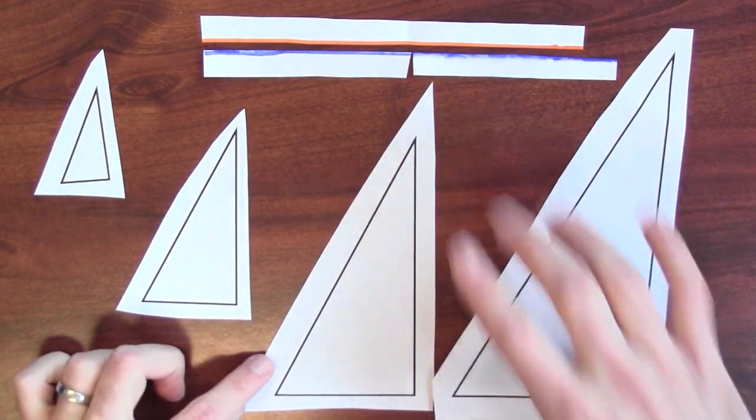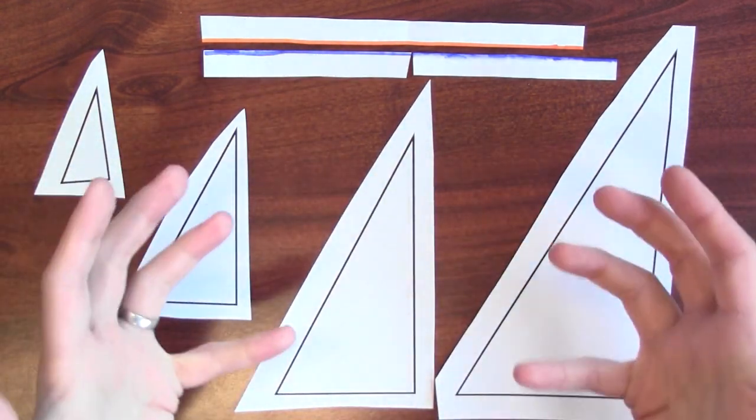The ratio of their heights to their widths are all the same, even though they're different sizes. That's the key fact that makes trigonometry work.